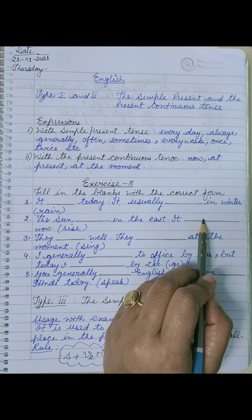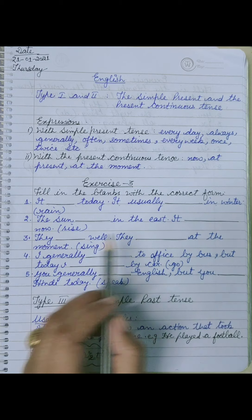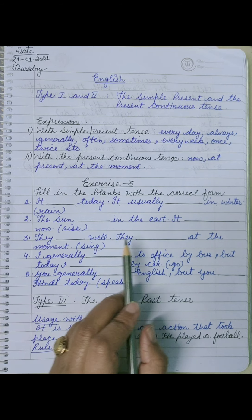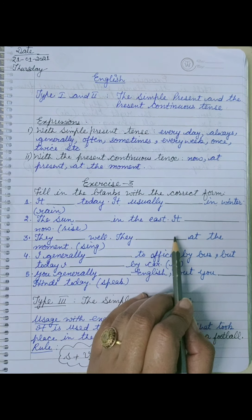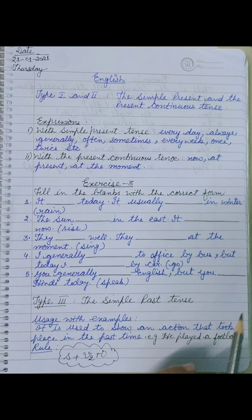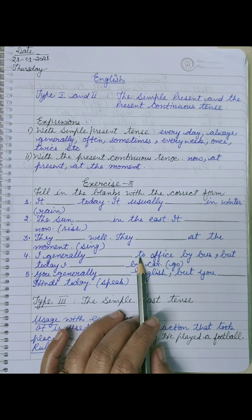It dash now, तो now कहां use करते हैं, continuous में - it is rising now, right? Third, they dash well - they sing well. They dash at the moment, तो at the moment किस में था, continuous में - they are singing at the moment.